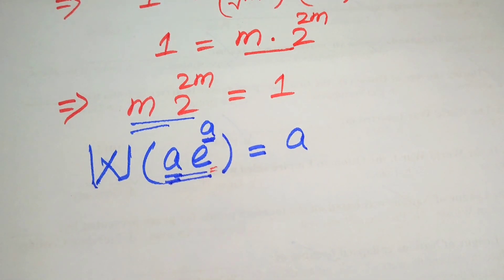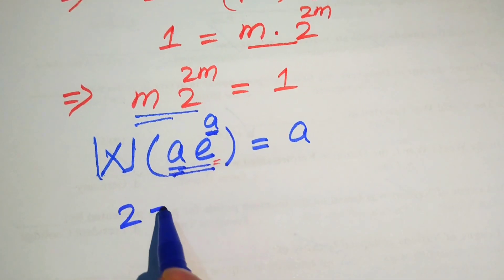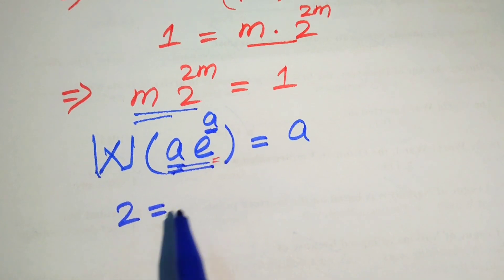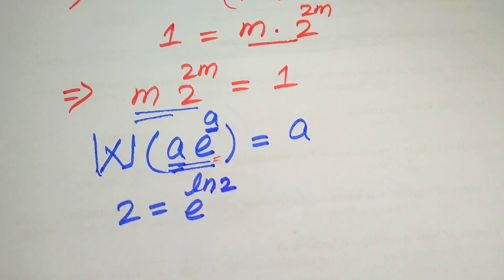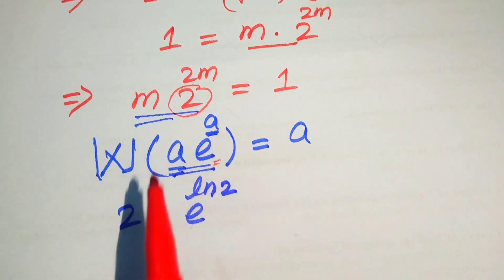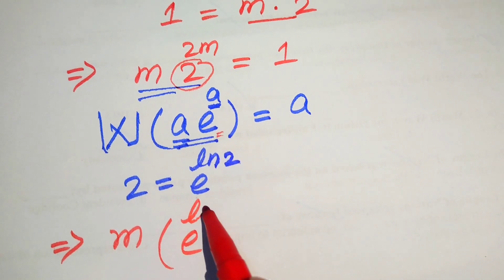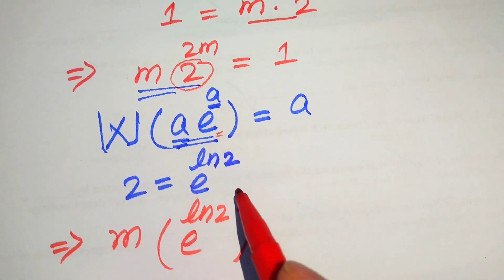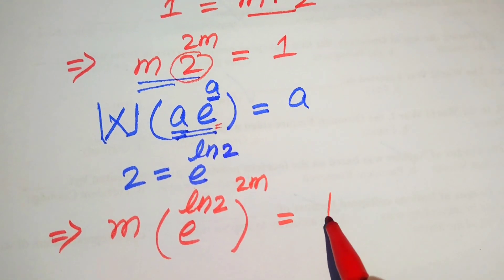We need to convert to base e. Since taking log and antilog of 2 simultaneously gives e to the power of log 2, we replace 2 with e to the power of log 2. Our equation becomes m times e to the power of log 2, raised to the power of 2m, equals 1.